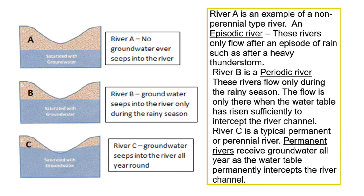These are the different types of rivers. I want to look first at River C. This is our river that's going to have water in it all year round because it intercepts the groundwater — it has base flow. This is referred to as a perennial river. Both River A and River B are non-perennial rivers and would be indicated on a topographical map with a dotted line. River A is the episodic river and will only have water in it during or just after it has rained. River B is the periodic river and will have water in it during the rainy season — for most of South Africa, this is going to be during the summer months.